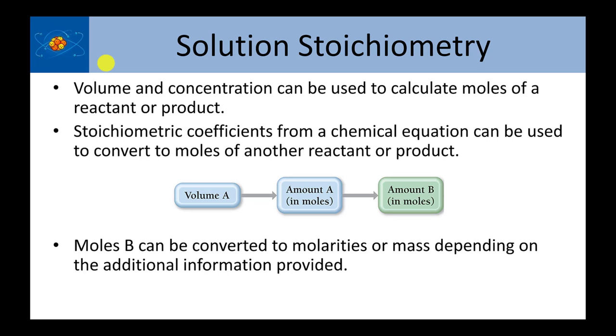For example, if I have a volume of A, I can use the molarity to calculate the moles of A, and then just like in all the other stoichiometry problems, from that point on, it's a mole-to-mole conversion using the stoichiometric coefficients and the balanced chemical reaction. And then once you're at moles of B, you can either go to grams as an option using the molar mass, or you could go to a volume using the molarity.